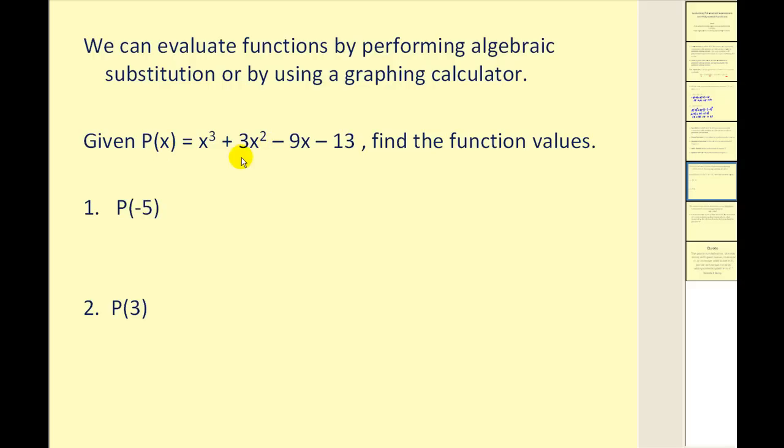Here we have a polynomial function of degree 3, and we're asked to find the function values. It's essentially the same as evaluating an expression, except the notation is different. Here the x has been replaced with -5, and this is how we evaluate this function when x = -5 by performing substitution. So we have -5³ + 3(-5)² - 9(-5) - 13.